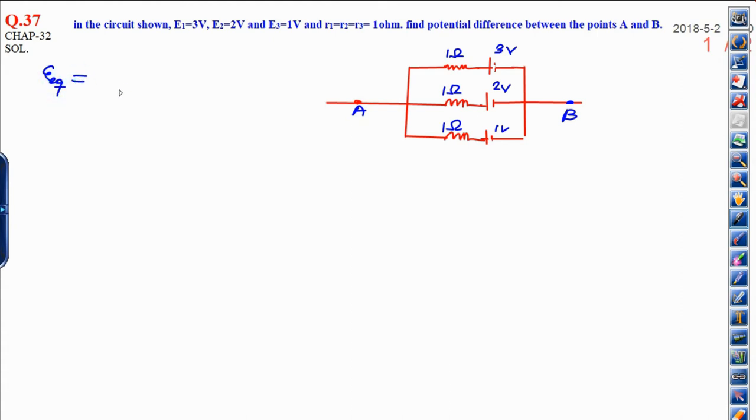Can be calculated by E1 R1 plus E2 R2 plus E3 R3 whole divided by R1 plus R2 plus R3.